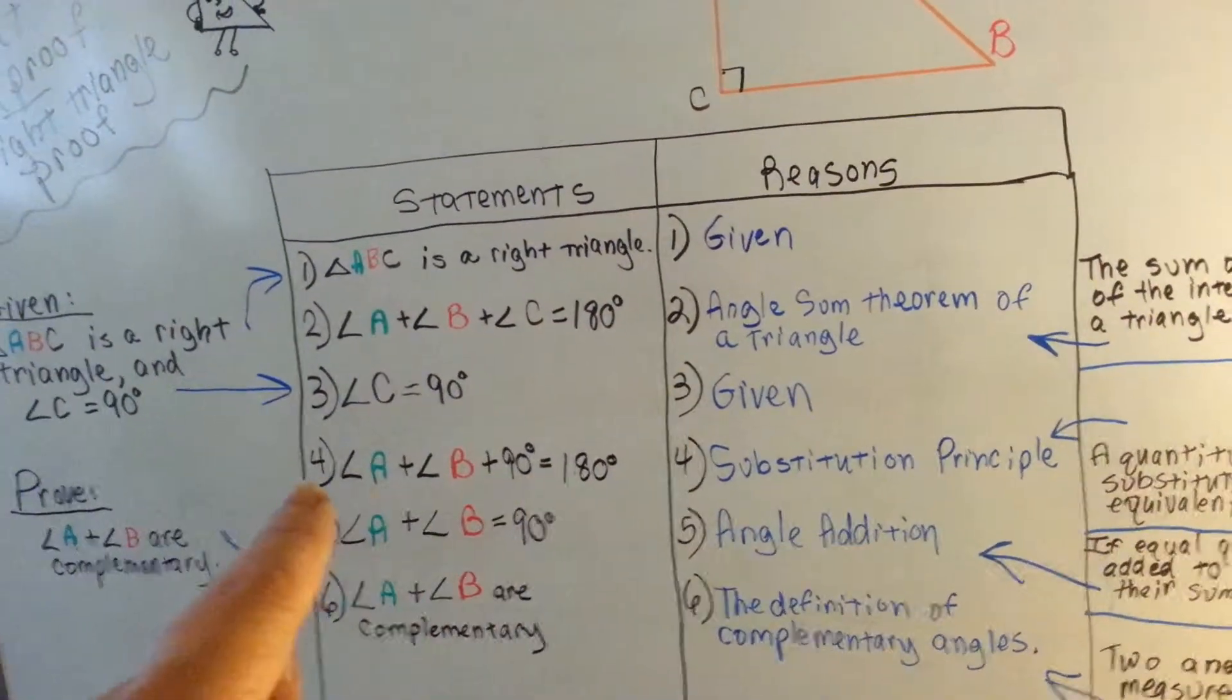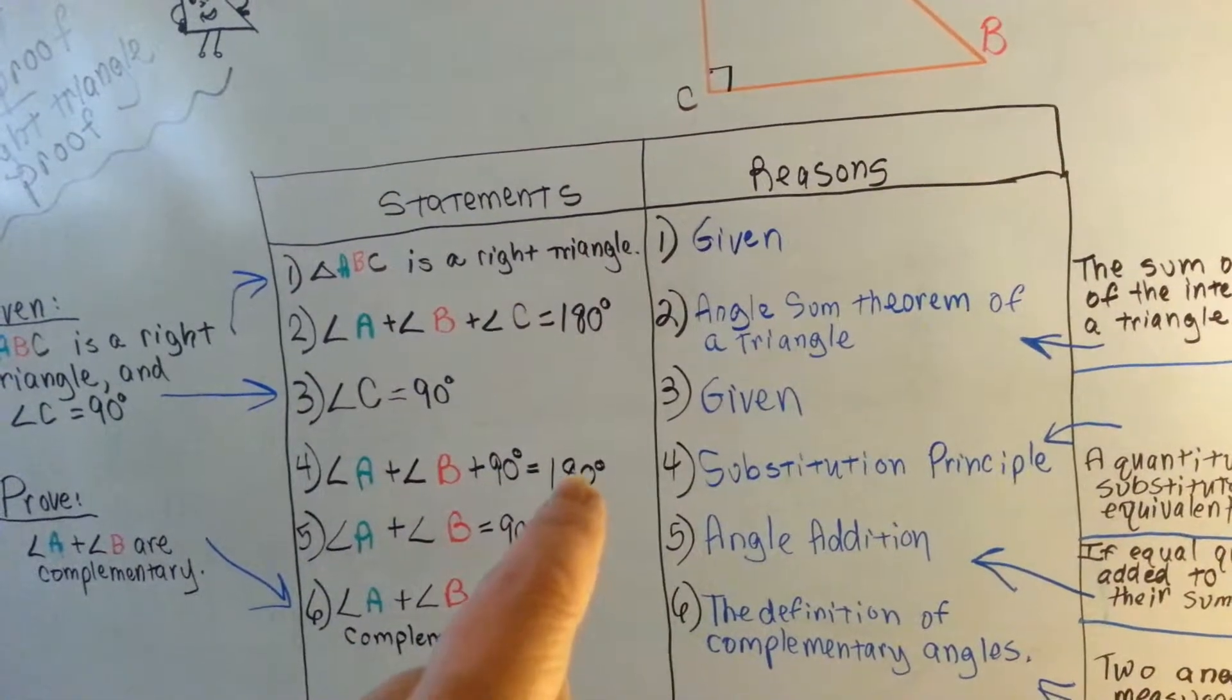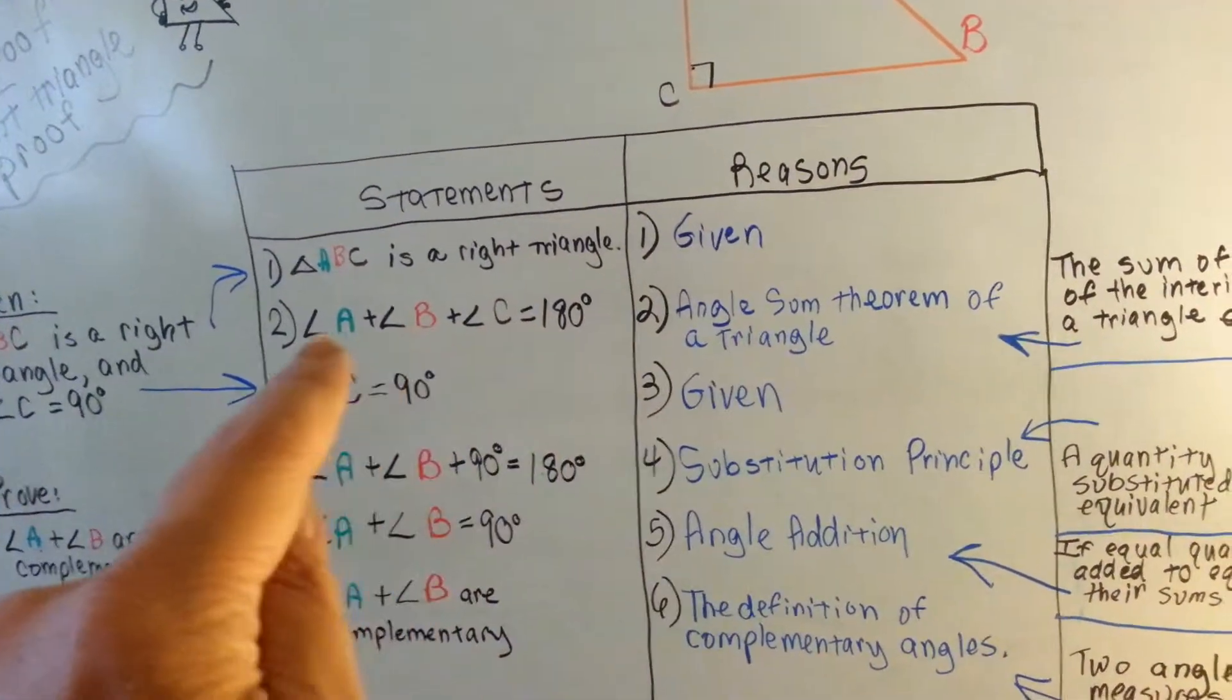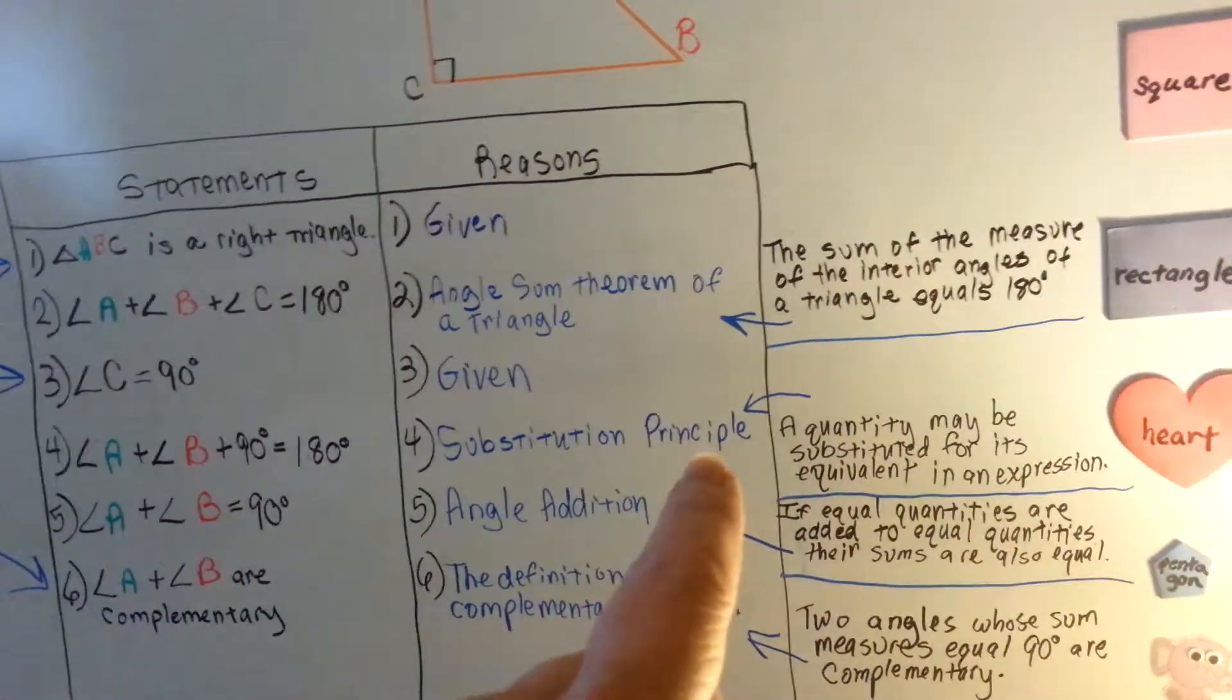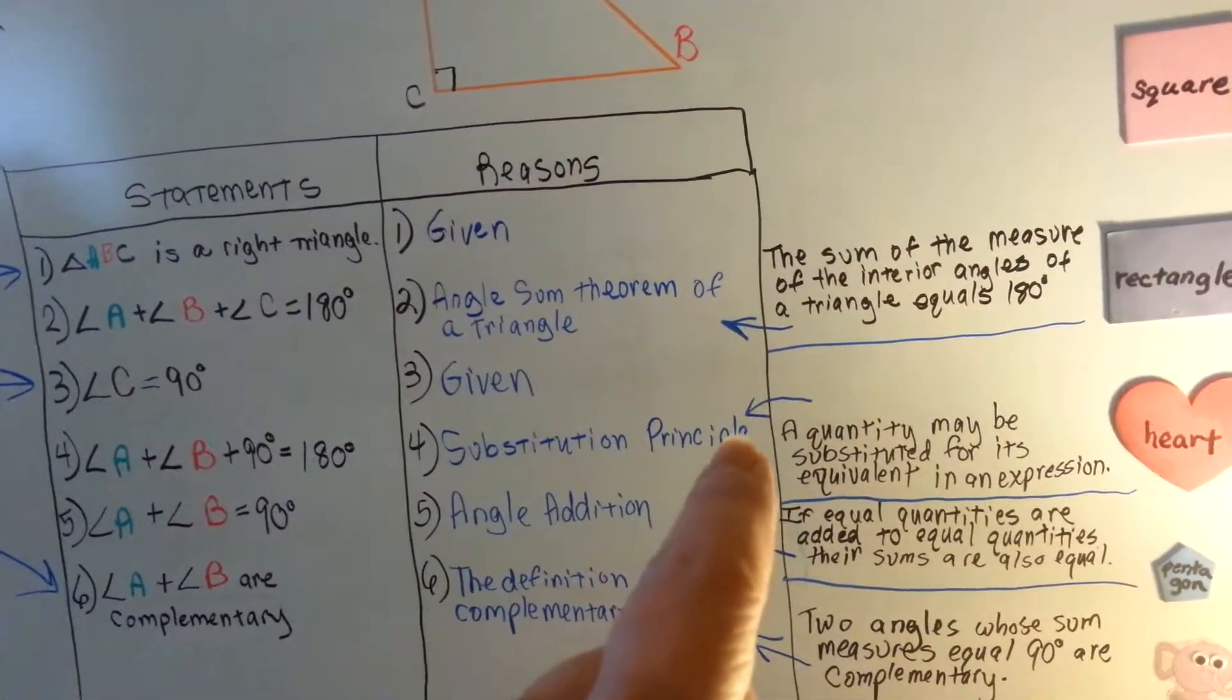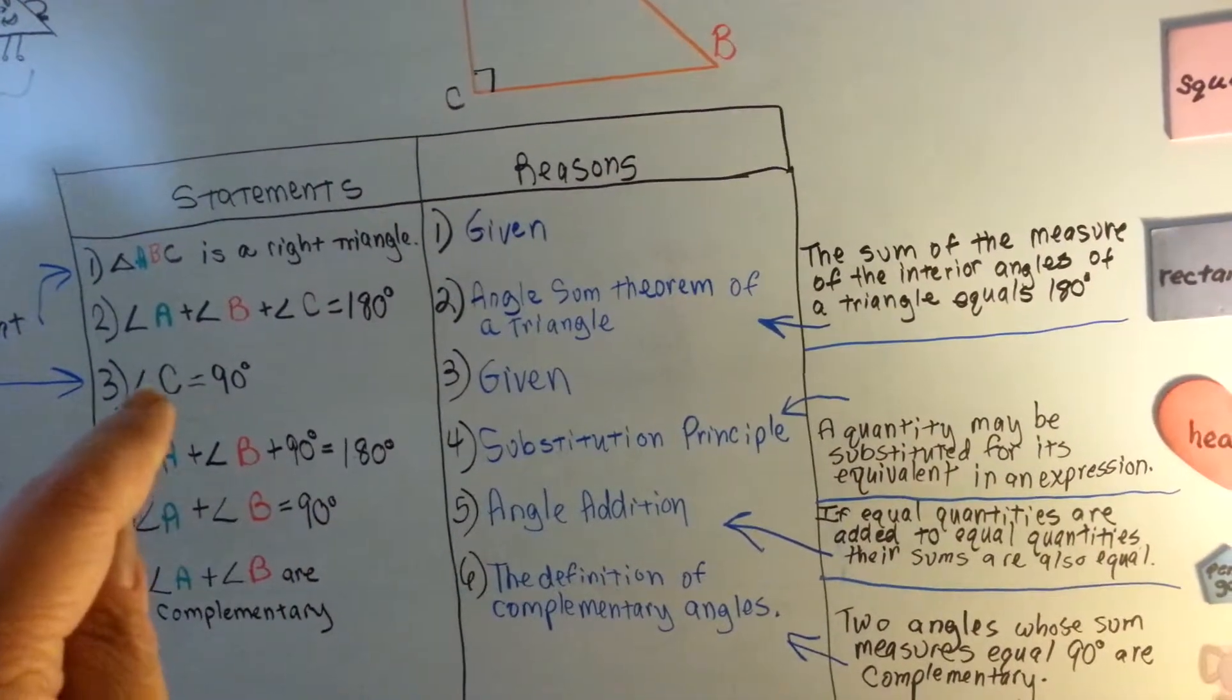So let's look at 4. The reason that angle A and B plus this 90 equals 180 is not only because the whole thing has to equal 180, but the substitution principle which states a quantity may be substituted for its equivalent in an expression. That's why 90 is here instead of C. Okay?